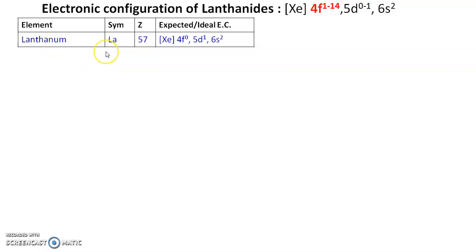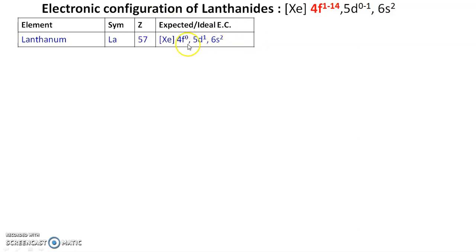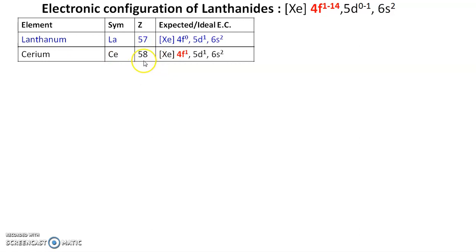Consider the first element, lanthanum. It is actually not an f-block element — it is a d-block element. Lanthanum has atomic number 57 and configuration [Xe] 4f⁰ 5d¹ 6s². Beyond xenon's 54 electrons, 3 more electrons must be accommodated: 2 go into 6s and 1 into 5d. This is because 4f and 5d energy levels are nearly the same, so the electron enters 5d, making lanthanum a d-block element.